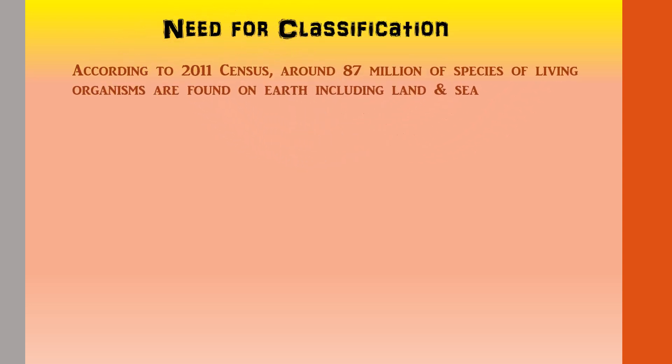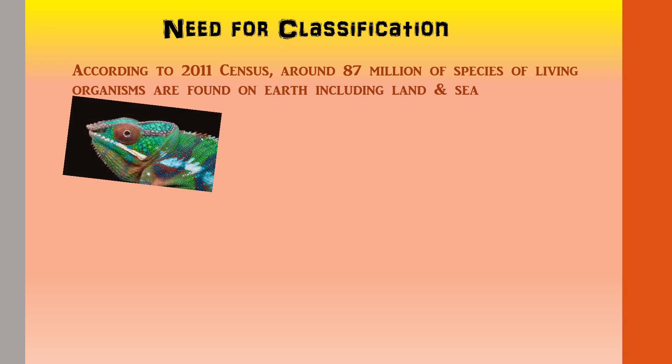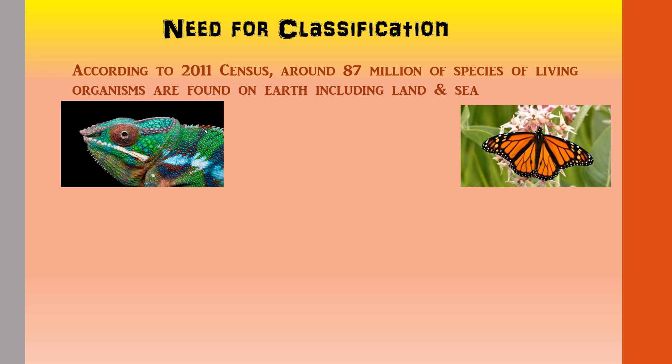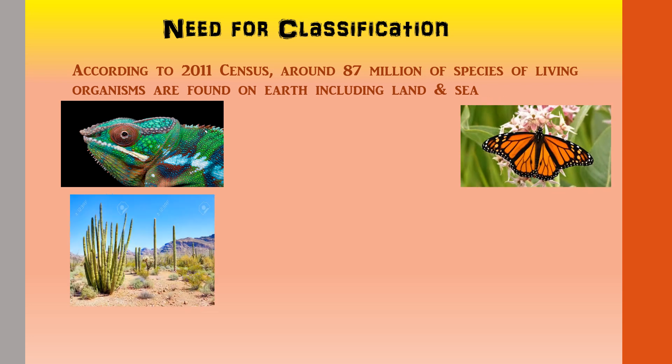Why is there a need for classification? According to the 2011 census, around 87 million species of living organisms are found on earth, including land and sea.